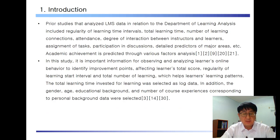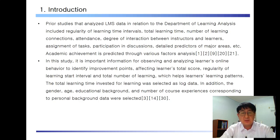Factors of interest in learning analytics include the regularity of learning time intervals, total learning time, number of learning connections, attendance, degree of interaction between instructor and learner, assignment of tasks, participation in discussion, and detailed progress management, among others. Academic achievement is a product of various factors. In this study, we analyze actual log data and personal background data from distance learning center learners to determine how each factor affects the total score.